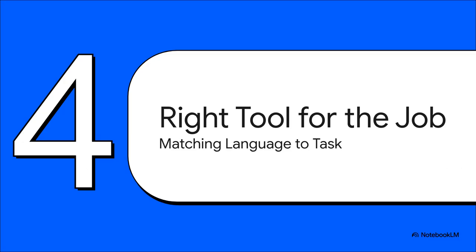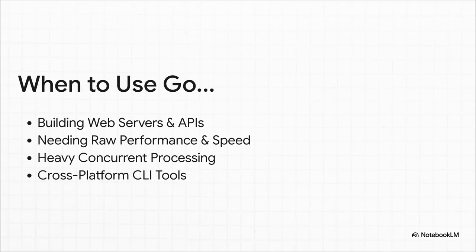So what does all this technical stuff actually mean for you? It all comes down to one thing: picking the right tool for the job. These differences directly translate into what you'd actually use these for in the real world. You pull out the Go F1 car when you are building serious, professional-grade infrastructure — web servers, high-speed APIs, anything that has to juggle thousands of things at once without breaking a sweat.